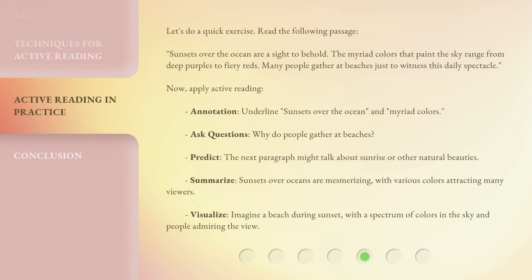Let's do a quick exercise. Read the following passage: 'Sunsets over the ocean are a sight to behold. The myriad colors that paint the sky range from deep purples to fiery reds. Many people gather at beaches just to witness this daily spectacle.' Now apply active reading. Annotation: Underline 'sunsets over the ocean' and 'myriad colors.' Ask questions: Why do people gather at beaches? Predict: The next paragraph might talk about sunrise or other natural beauties. Summarize: Sunsets over oceans are mesmerizing, with various colors attracting many viewers. Visualize: Imagine a beach during sunset, with a spectrum of colors in the sky and people admiring the view.